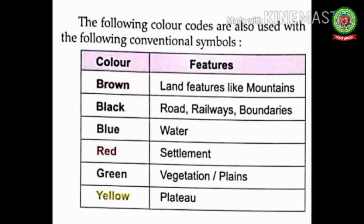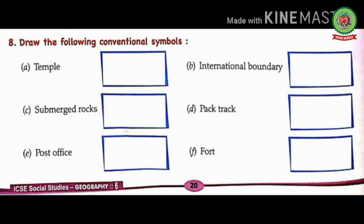Yellow color depicts plateau, but we actually use yellow for cultivable land and orange for plateau. I hope this concept is clear to all students. Today we have covered this topic. Your homework is to read today's topic and do exercise 8 on page number 20 of your book. Thank you.